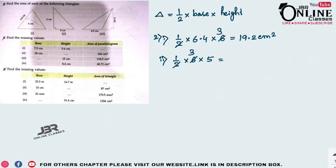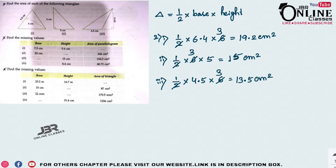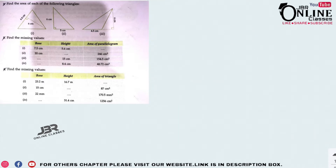Number 2: ½ × base × height, base = 5, height = 6. Cancel out the 2: 3 × 5 = 15 cm² as the answer. Last one: base = 4.5, height = 6, so ½ × 4.5 × 6 = 4.5 × 3 = 13.5 cm² as the area.